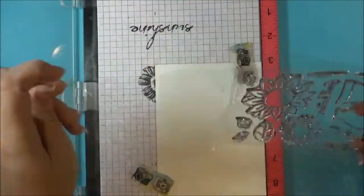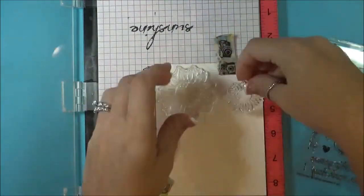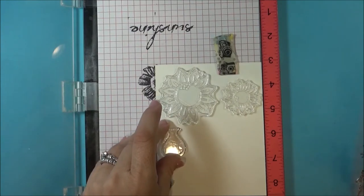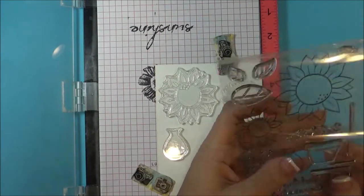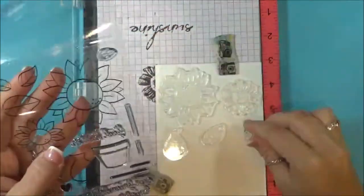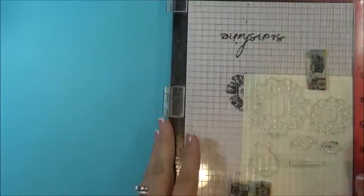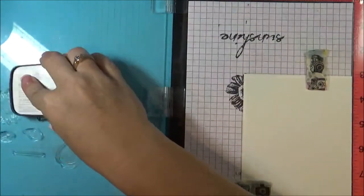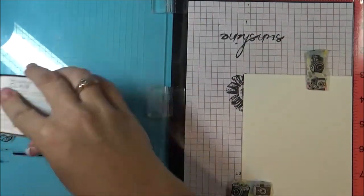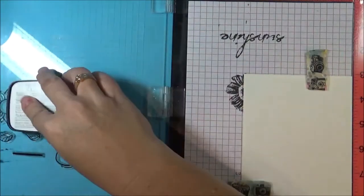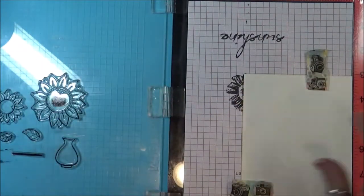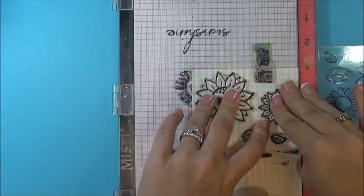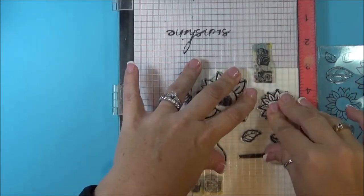Everything that I'm going to stamp with some black ink I'm going to put on here right now. I'm going to use some VersaFine Clair in Nocturne to stamp them, and because this watercolor paper is textured, I'm going to probably stamp it twice just to make sure I get a good solid image or a good crisp stamp on this textured paper.